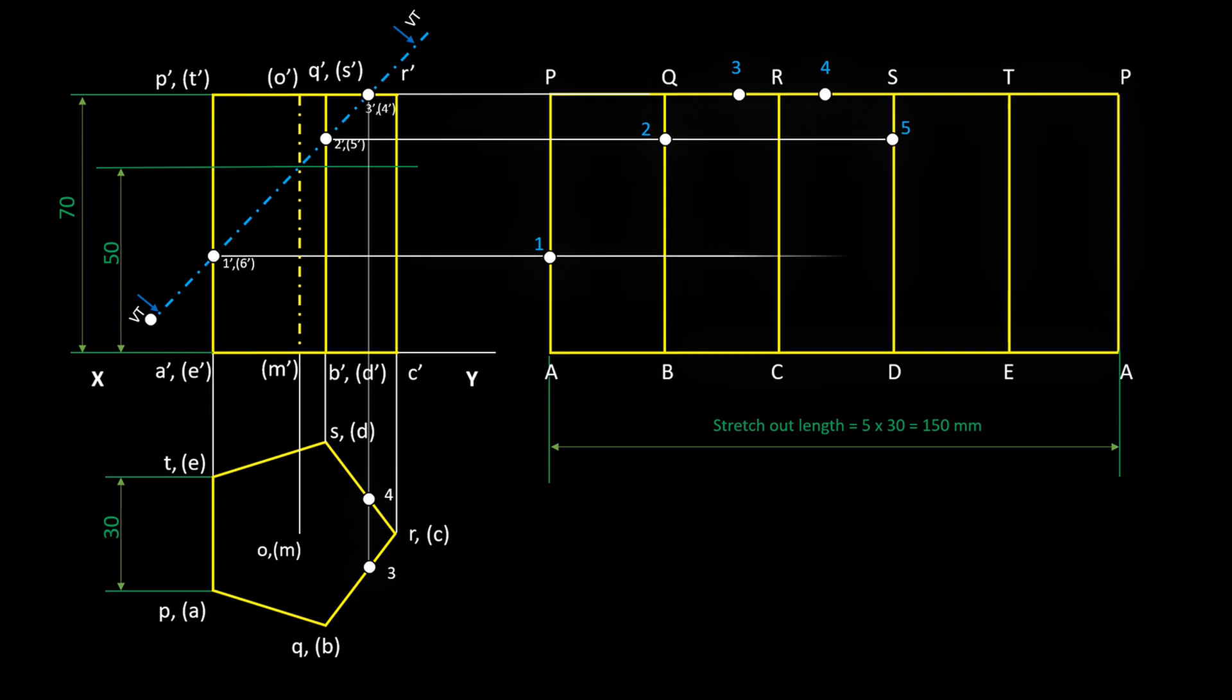Point 5 cuts the edge DS. Point 6 cuts the edge ET. And finally point 1 cuts the edge AP. Join the section points and complete the pattern with straight lines, because our base edges are straight line.